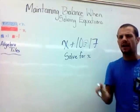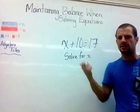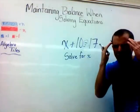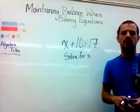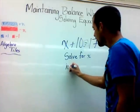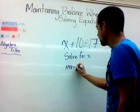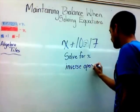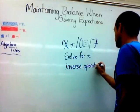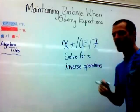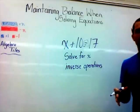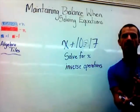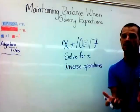We already know, because this is a fast fact for us, that x equals 7. But how did we get there? How did you know that x equals 7? You worked backward and you used something called inverse operations. In other words, you noticed that you need to use the opposite operation than the one that's being shown.